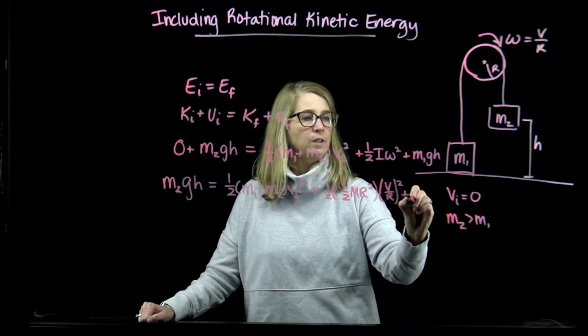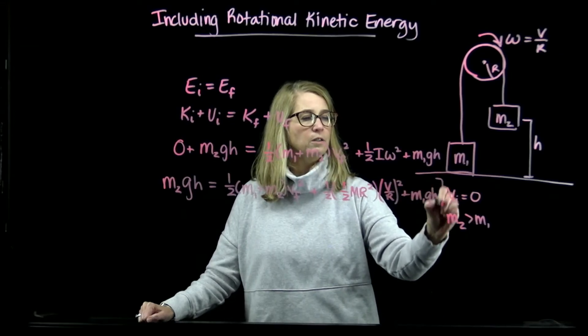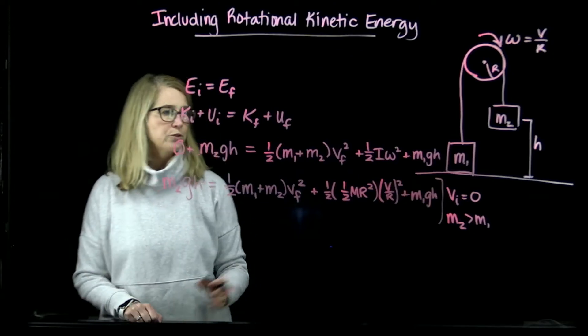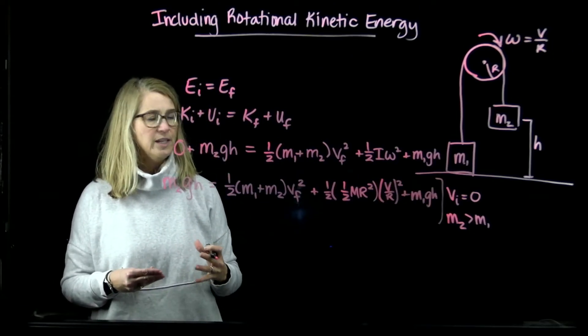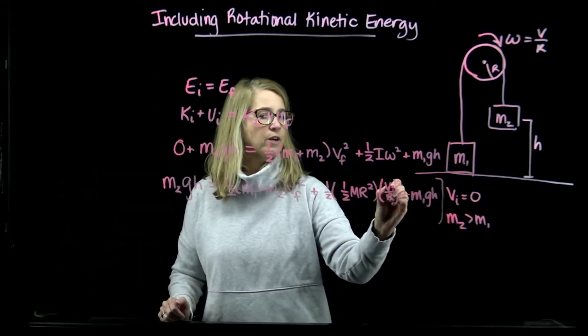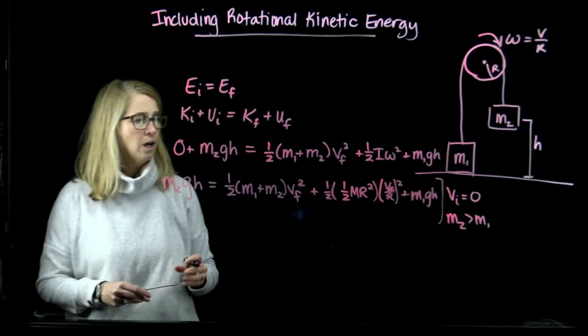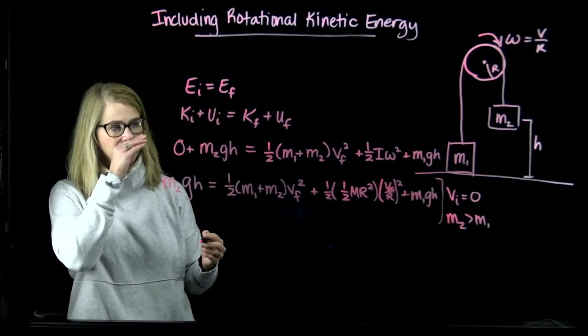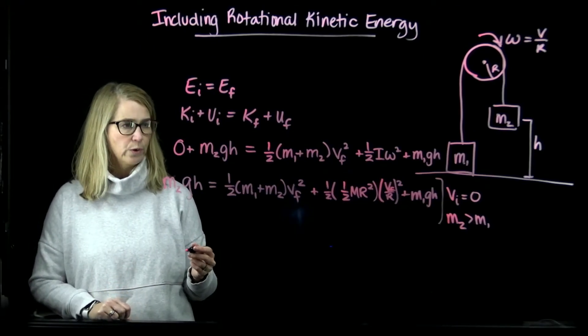So that's ω squared, and then plus m1gh. So a little tight on space, but that's it. So now I can see that I have a situation where I could now potentially solve for the final velocity. I'm going to do a little bit more simplification before I go for that.